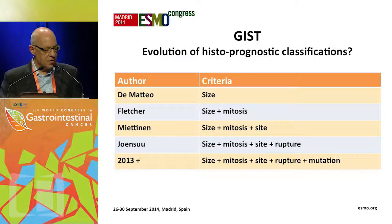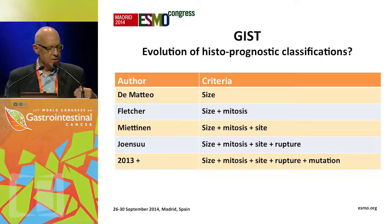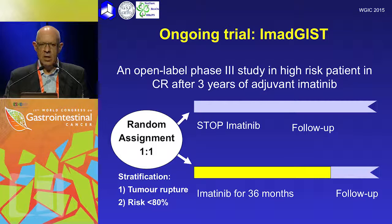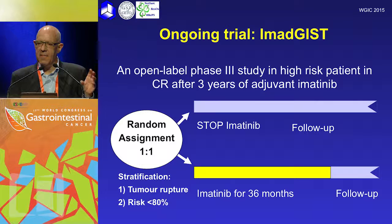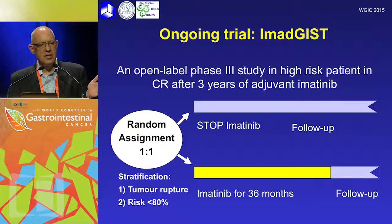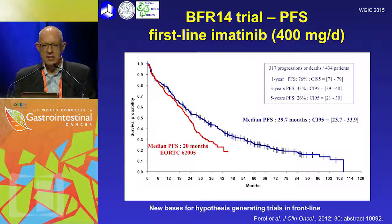As we move through 2015, it looks like the things that will determine prognosis are size, mitotic rate, site, rupture, and mutation analysis. What do we do when patients complete their three years of treatment? There is an ongoing study — currently with a small number of patients — where high-risk patients who have had three years of adjuvant imatinib are randomised to stopping, which is the current standard of care, versus continuing for another three years. We'll have to see what happens as these data develop.